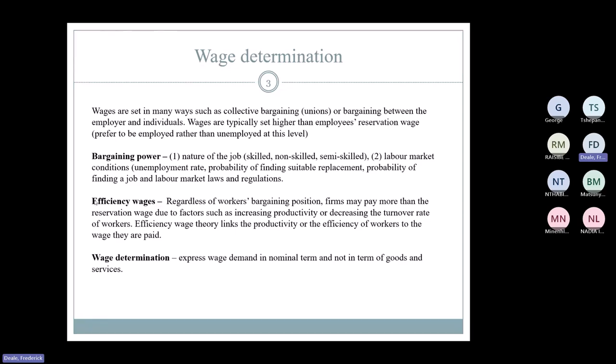Another concept is efficiency wages. Regardless of your bargaining position, a firm may pay you more than your reservation wage to increase productivity or decrease worker turnover. If you always pay the minimum, someone else can steal your employee by offering slightly more. So firms pay up for efficient workers to retain internal skills and reduce turnover.